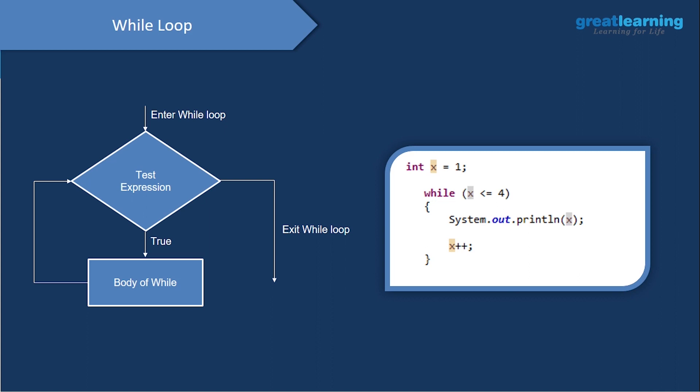Here's an example of a while loop. I declare int x equals 1. The while loop takes one condition: while x is less than or equal to 4, the loop continues. System.out.println x; then x equals x plus 1. Every loop execution increments by 1 until x exceeds 4, otherwise it would be an infinite loop — so we always specify a condition.